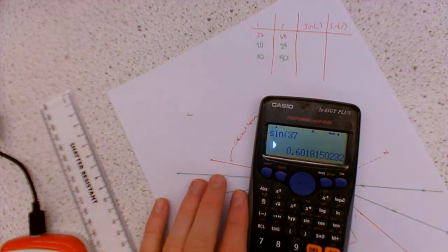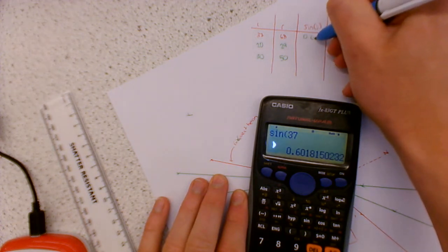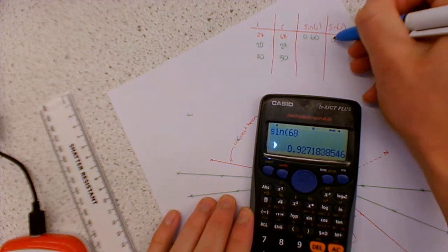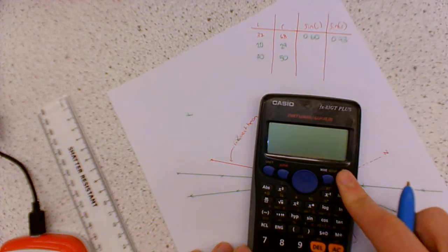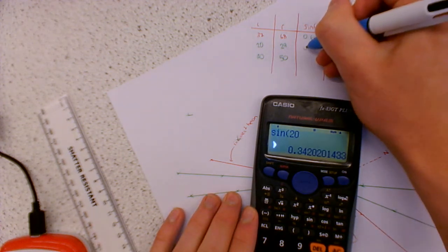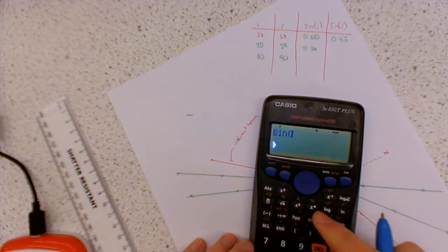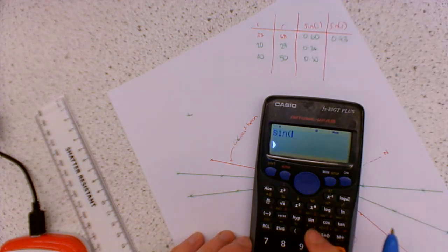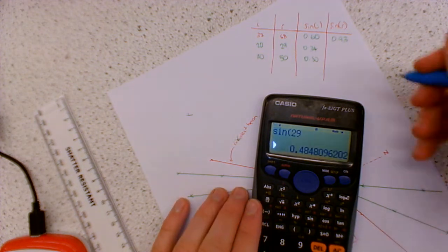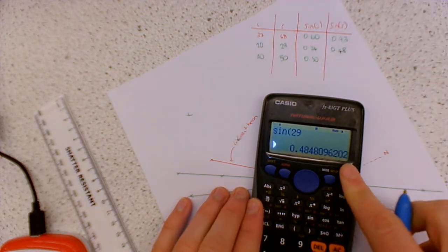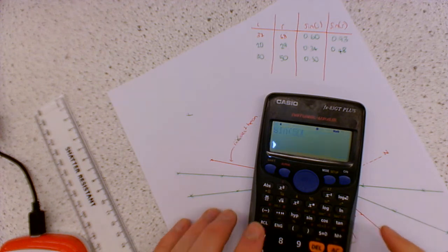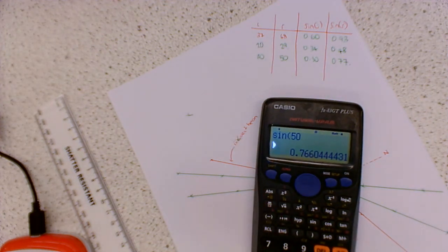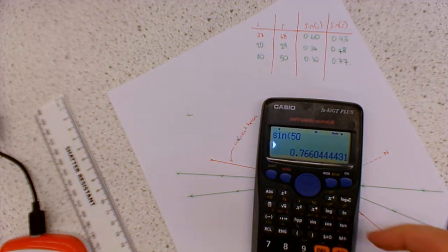So we're going to do sine 37. That's what? 0.60. Sine of 68, 0.93. Sine of 20, 0.34. Sine of 30 is a half exactly, which is always nice. Sine of 29 is basically giving me just under a half. And then sine of 50. That's 0.77. So immediately having calculated these things, there's nothing obvious from looking at them.